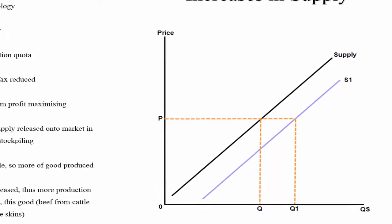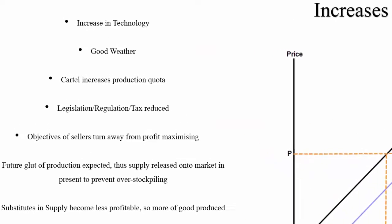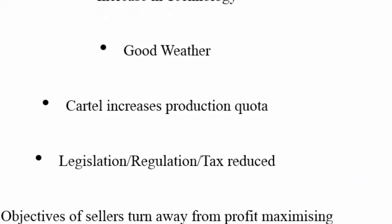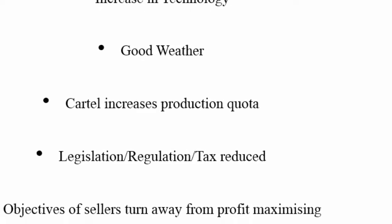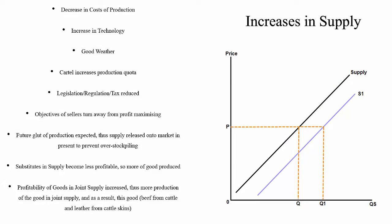Let's take a second example. Let's say a cartel such as OPEC, the organization of petroleum exporting countries, met and allowed an increase in the production quota of oil. If that happened there would be an increase in supply of oil on world markets and the supply curve will shift to the right.